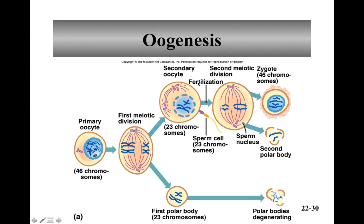Oogenesis resumes when puberty starts and the meiosis can restart. The primary oocyte will go through meiosis and result in one good egg — the secondary oocyte — and then one, two, or even sometimes three polar bodies. The polar bodies are much smaller and don't have as much cytoplasm, because the secondary oocyte has to bring a lot of cytoplasm and many organelles.